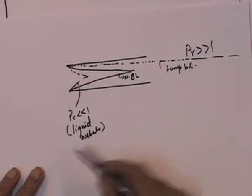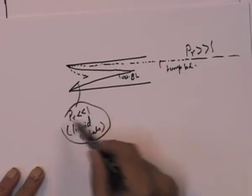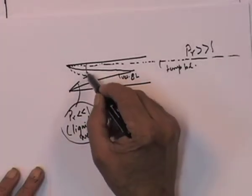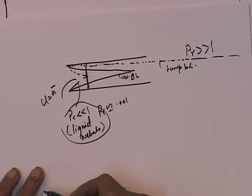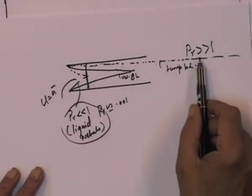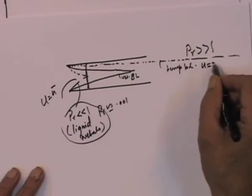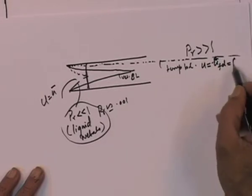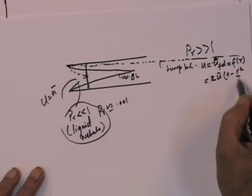So much so that we can make some very simple approximations for these two cases. For example, for liquid metals where Prandtl number is of the order of 0.001, over the greater part of the length, u will simply equal u-bar. Whereas when Prandtl number is very much greater than 1, over the greater part of the thermal development, u will simply equal u fully developed, which is a function of r. For a circular tube it will be 2 times u-bar into 1 minus r-squared by R-squared.